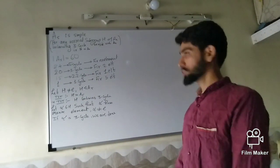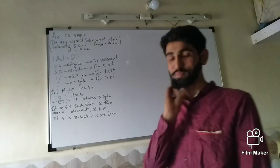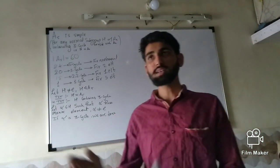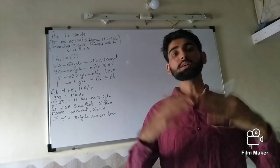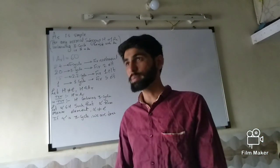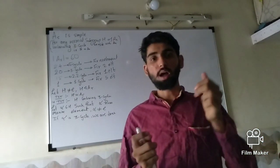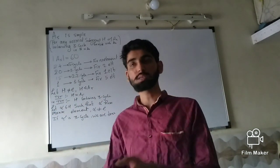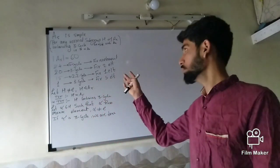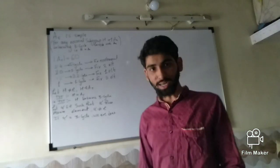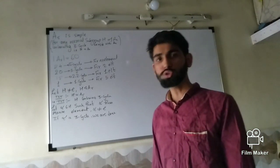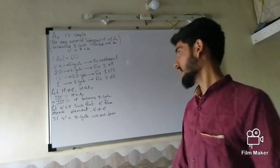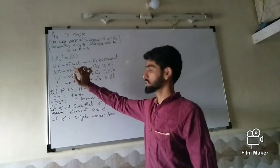First we should know what it means for a group to be simple. A group is said to be simple if it has only trivial normal subgroups — that means the identity and itself are the only normal subgroups of A5, and that is what we have to prove. The cardinality of A5 is 60.